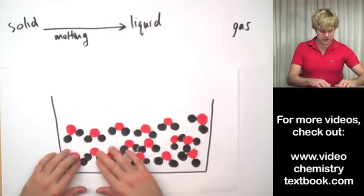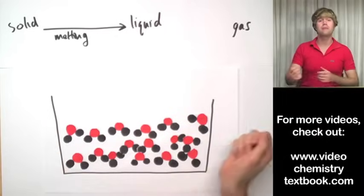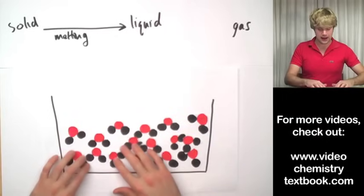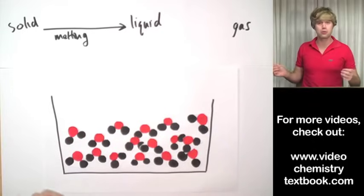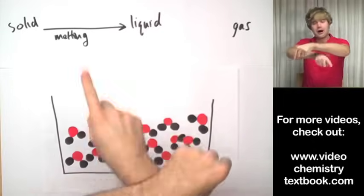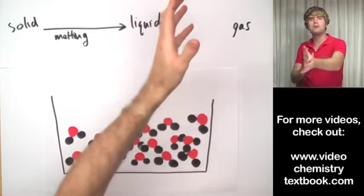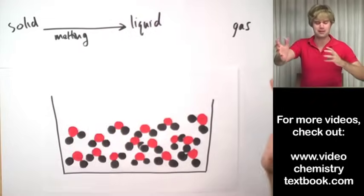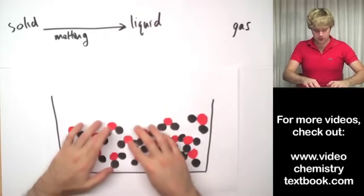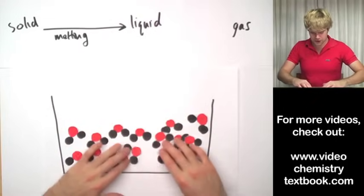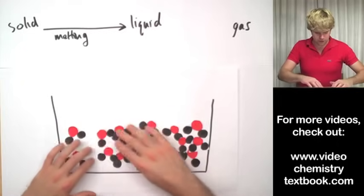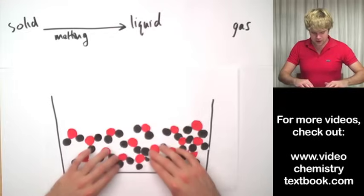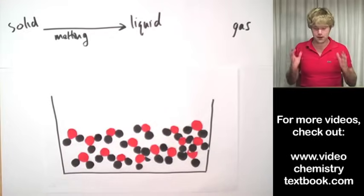Also, I can't show this as well, but these guys are moving around much faster than they were in ice. Liquid is like maybe when the band starts really playing and so people really start moving around, they start trading places. Some people want to get up close to the stage, other people want to move back. Similarly, we'd see all these molecules really moving around, they're jiggling, they're kind of swimming around in here. And that's what a liquid would look like.